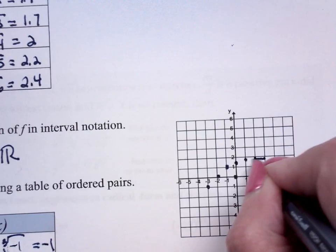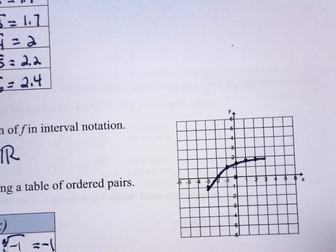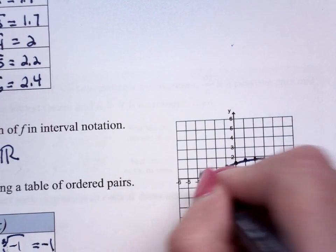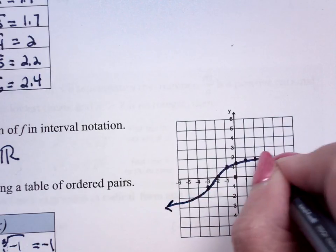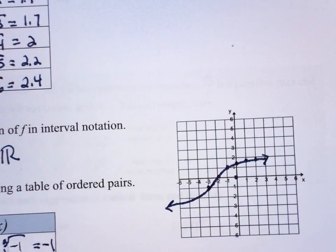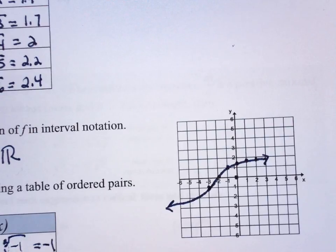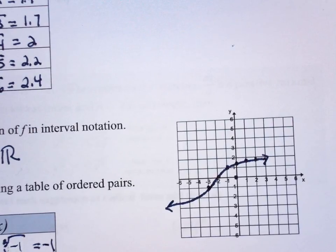Now he's a curved graph. And he looks like an S. He's going to continue to go in, go along like that. He's an S on his side. That's what cube root looks like. It's an S on his side. They all look the same.